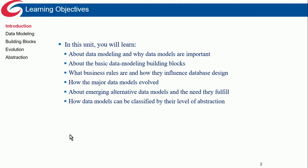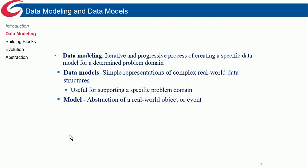We won't talk too much about big data throughout the course, but our focus will be on relational database models and how models can be classified by levels of abstraction. Data modeling is an iterative and progressive process of creating a specific data model for a determined problem domain. The problem domain is basically the problem you're developing a solution for — it has boundaries defining what we're designing and what problem we have to solve.